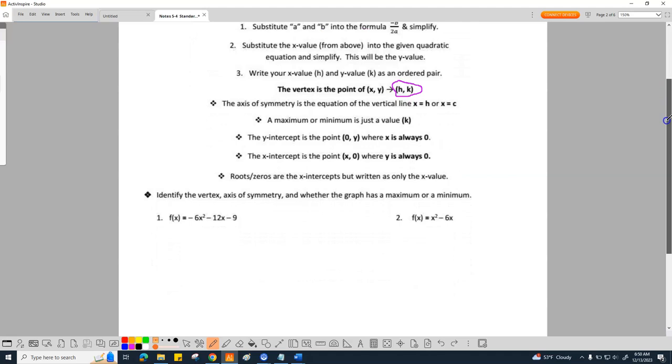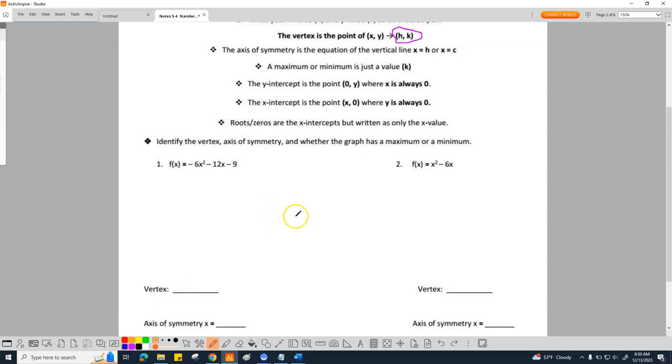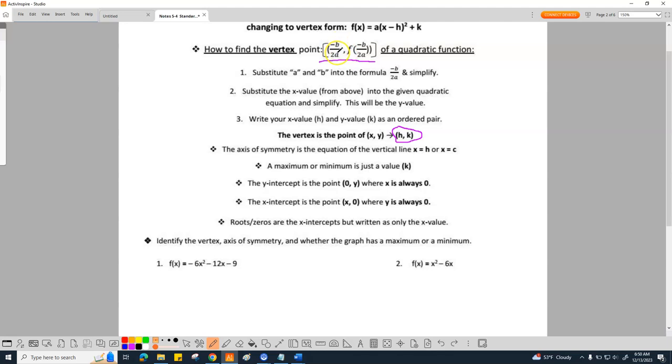So on number one, you ready? Let me get my ink selected to blue. You're going to start off by trying to internalize what this is saying up here, which is the h is negative b over 2a, comma f of negative b over 2a.